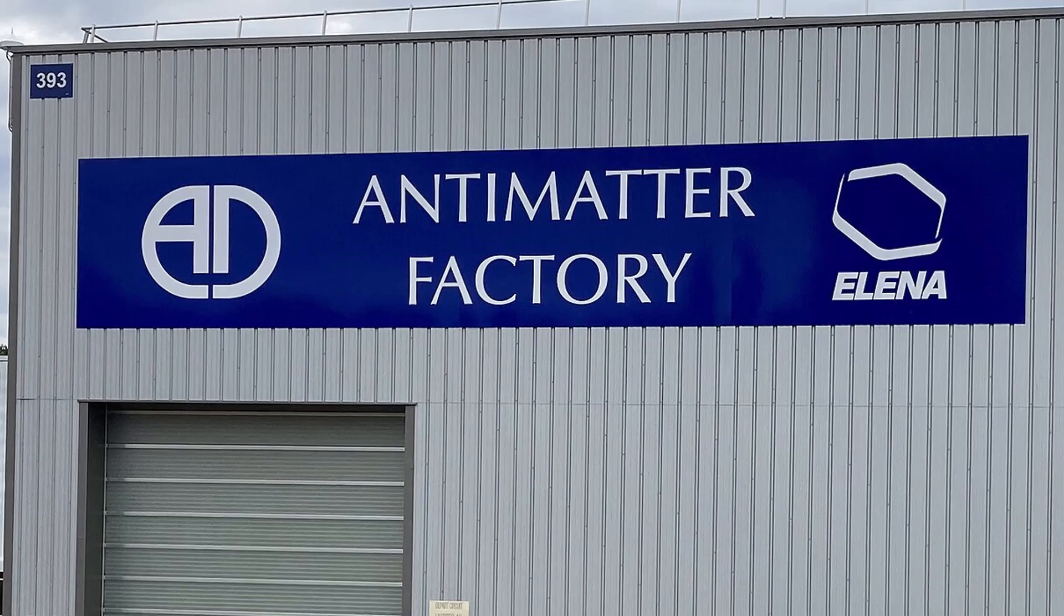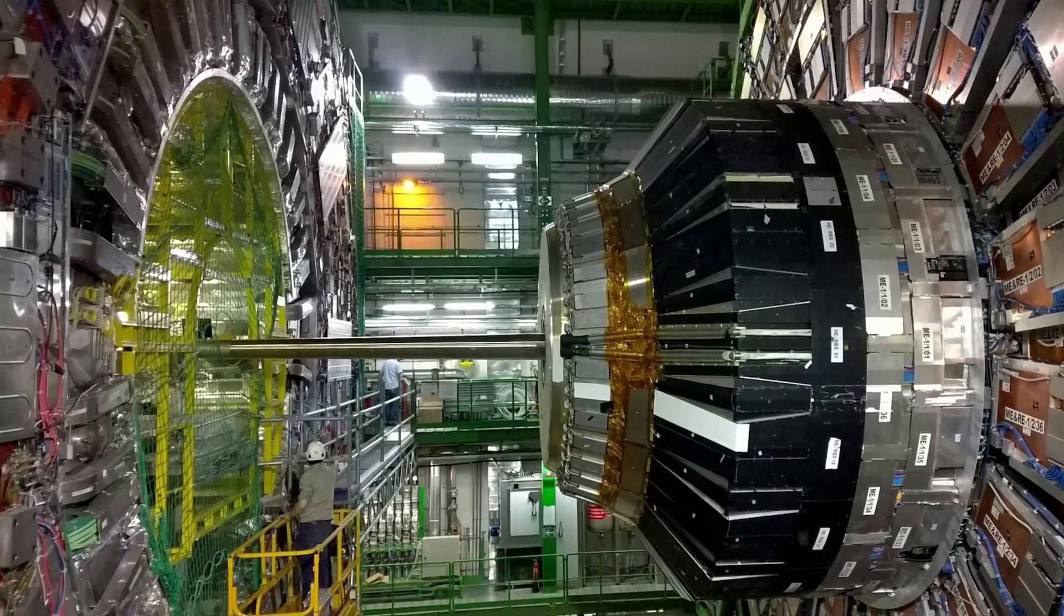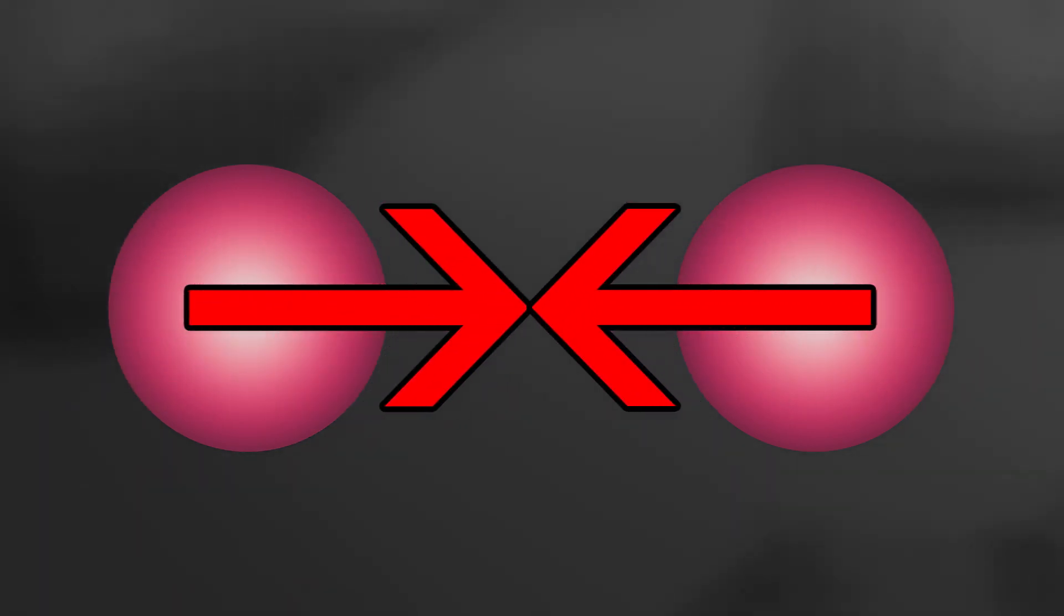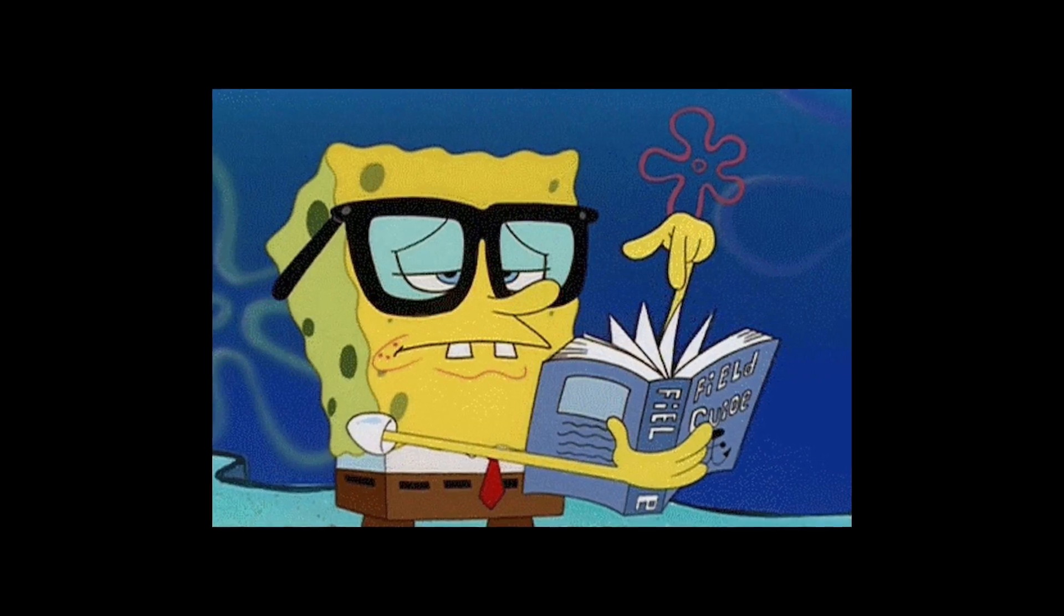To make antiprotons, you need a machine like the Large Hadron Collider. If we fire two beams of ultra-fast protons at each other, they collide and create new particle-antiparticle pairs. This is the primary method for creating most types of antimatter.